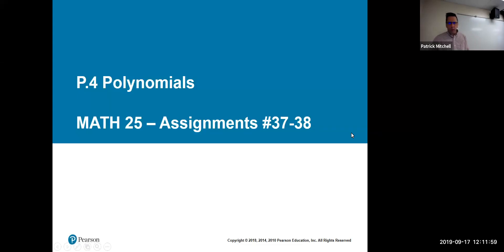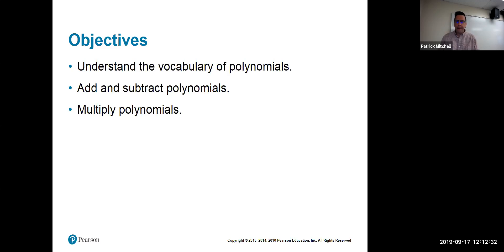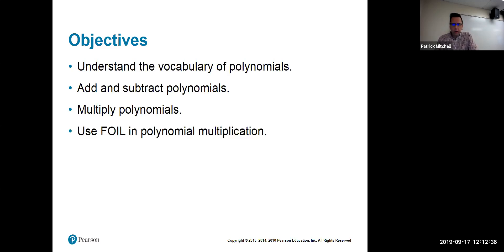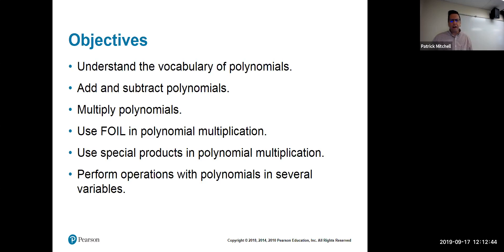Hi everybody, it's Professor Mitchell. We're continuing our review of some topics that we need for chapter 5. We just went over exponent rules and now we are reviewing polynomials. We're going to cover vocabulary, adding and subtracting polynomials, multiplying polynomials, FOIL, special products, and polynomials in several variables. In chapter 5, our polynomials will have sine x's and cosine x's in them, so they're like several variables.